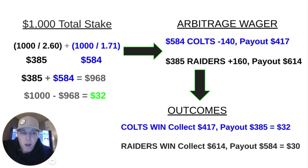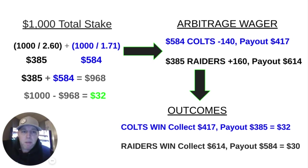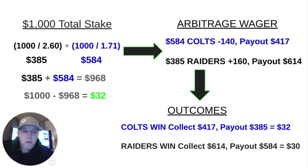Using these numbers on the arbitrage wager shown in the top right of the screen: a risk of $584 on the Colts at minus 140 odds would pay out $417. A $385 risk on the Raiders at plus 160 odds pays out $614. No matter the outcome, it's a profit of roughly $32. If the Colts win, we collect $417 and pay out $385 — a profit of $32. If the Raiders win, we collect $614 but pay out $584 — that equals $30 in profit.